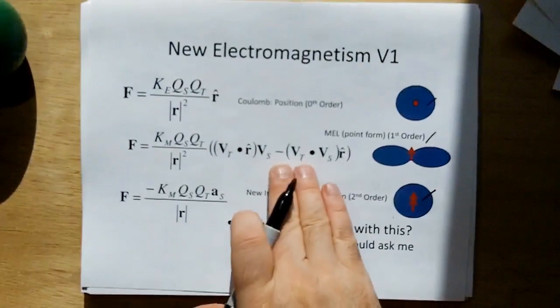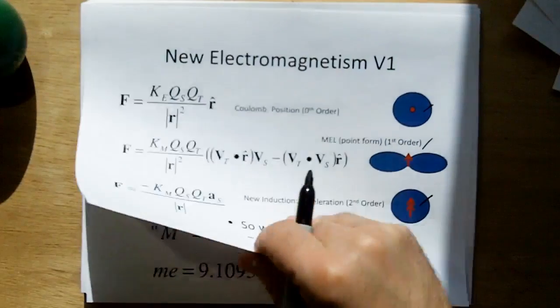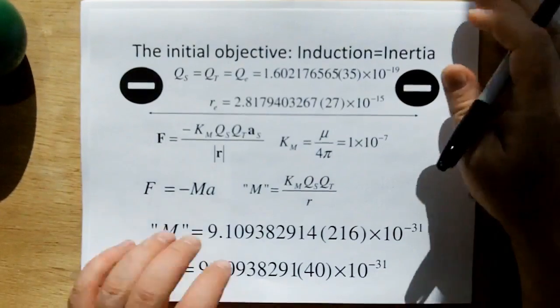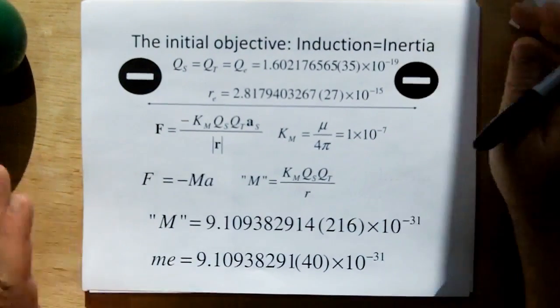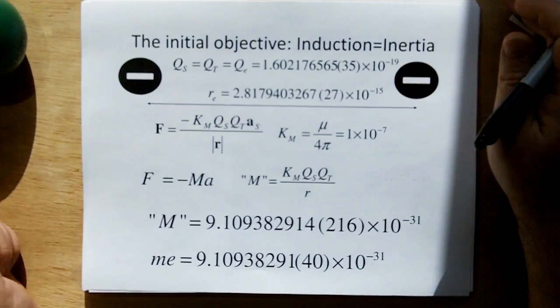Well, we have what's called the Motional Electric Law, where F equals QV cross B. And if we combine that with the Biot-Savart model, you can derive the following. And then we can put that into the equation. This becomes new electromagnetism V1. And just to reassert to you that Coulomb's model shows a spherical field, new induction shows a spherical field, and the first order form only shows a transverse field.